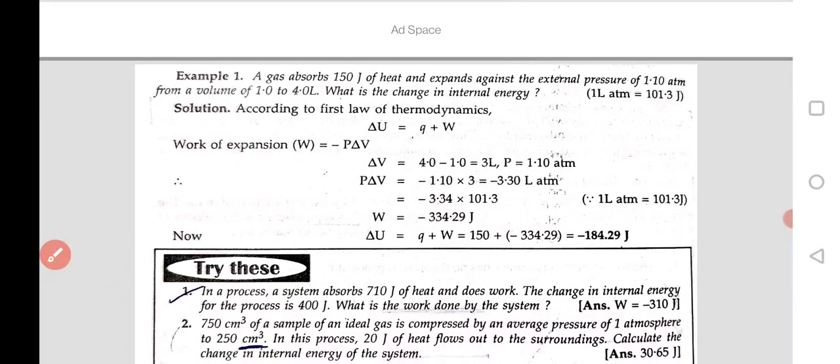Okay, is it clear? And this is another numerical. This is also based on the application of first law of thermodynamics. So in this statement, read it. A gas absorbs 150 Joule of heat and expands against the external pressure of 1.10 atmosphere from a volume of 1 to 4 liters. It means volume the value is given. V1 is given. V2 is given. And pressure is given which is 1.10. And here we are asked change in internal energy.